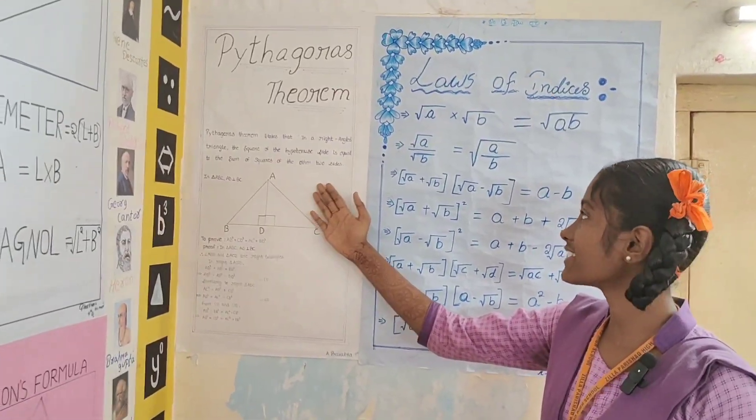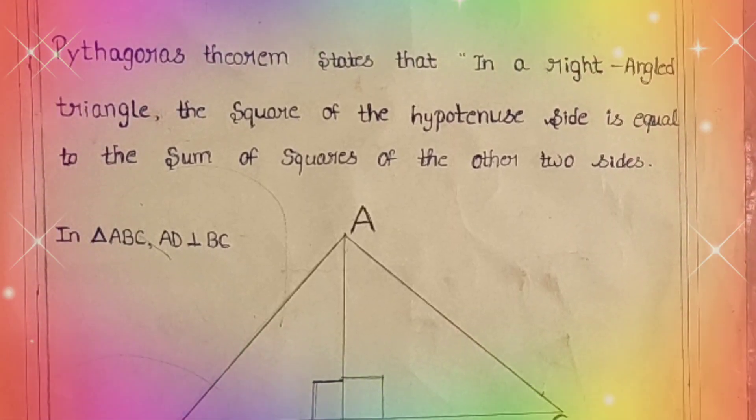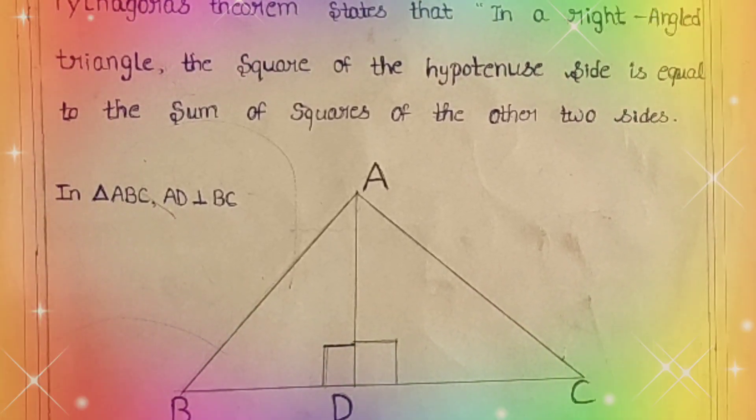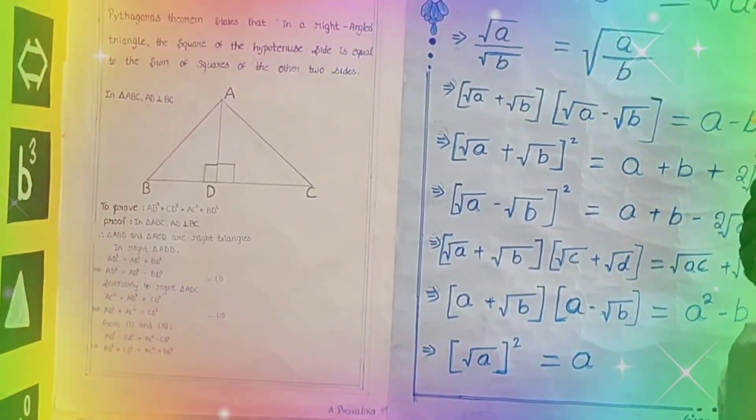Pythagoras theorem. Pythagoras theorem states that in a right-angled triangle, the square of hypotenuse side is equal to the sum of the squares of the other two sides. Pythagoras theorem is provided by Pythagoras. Pythagoras theorem is also known as Baudhayana theorem.